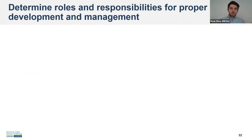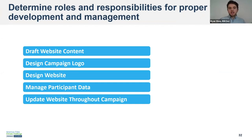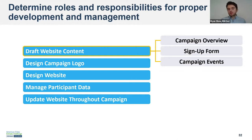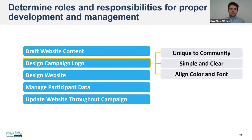Determining these roles and responsibilities is important for accountability and operating a website efficiently. These are the primary responsibilities that you'll want to have someone on your team responsible for. The first is drafting the website content — this is what most of our presentation is about today, including things like the overview of the campaign, the sign-up form, and events. While we have a template that you'll be working with in your community breakouts in the second half of this workshop, just making sure someone is responsible for finalizing that. The second is the campaign logo.